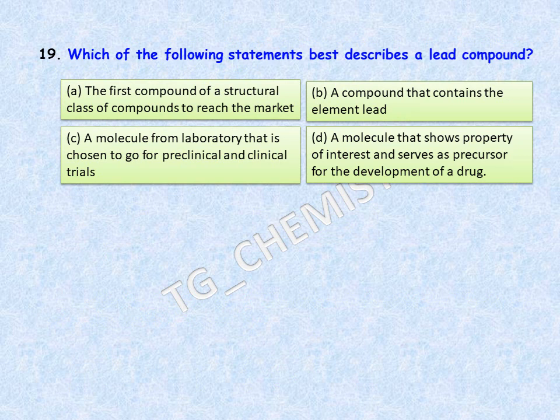Next question: which of the following statements best describes a lead compound? Option A: the first compound of a structural class to reach the market. Option B: a compound containing the element lead (Pb). Option C: a molecule from the laboratory chosen for pre-clinical and clinical trials. Option D: a molecule that shows property of interest and serves as a precursor for drug development via SAR. The correct answer is option D.